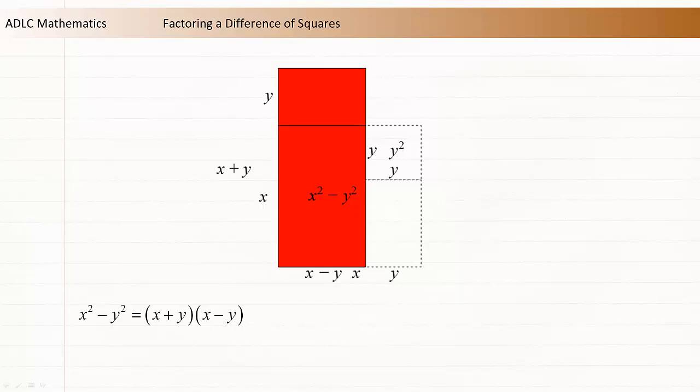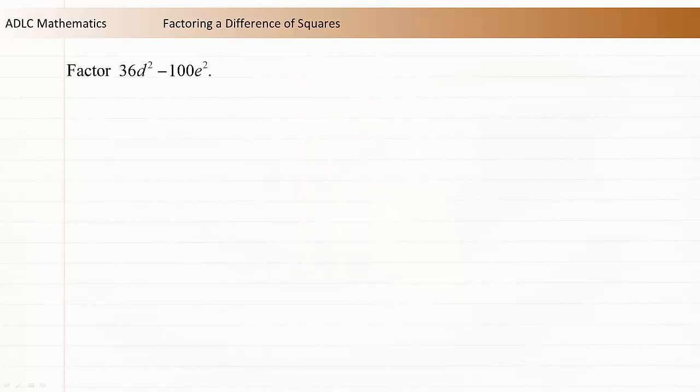Let's look at a numerical example. Factor 36d squared minus 100e squared. It's possible to introduce a 0de term and factor using decomposition, but this polynomial follows a pattern, so there's a shorter method.